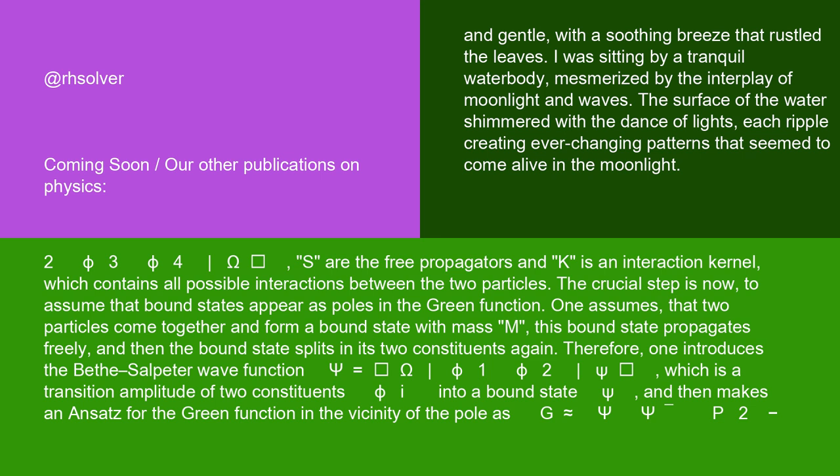The crucial step is now to assume that bound states appear as poles in the Green function. One assumes that two particles come together and form a bound state with mass m. This bound state propagates freely, and then the bound state splits in its two constituents again.